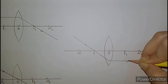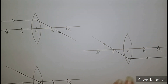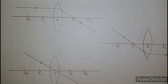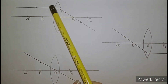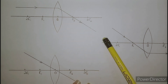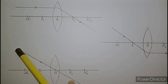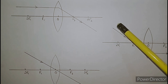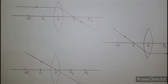So these are the three rules used for making ray diagrams of lenses. To revise: parallel to the principal axis passes through the focus; a ray of light goes straight through the optical center; and a ray passing through the focus becomes parallel to the principal axis after refraction.